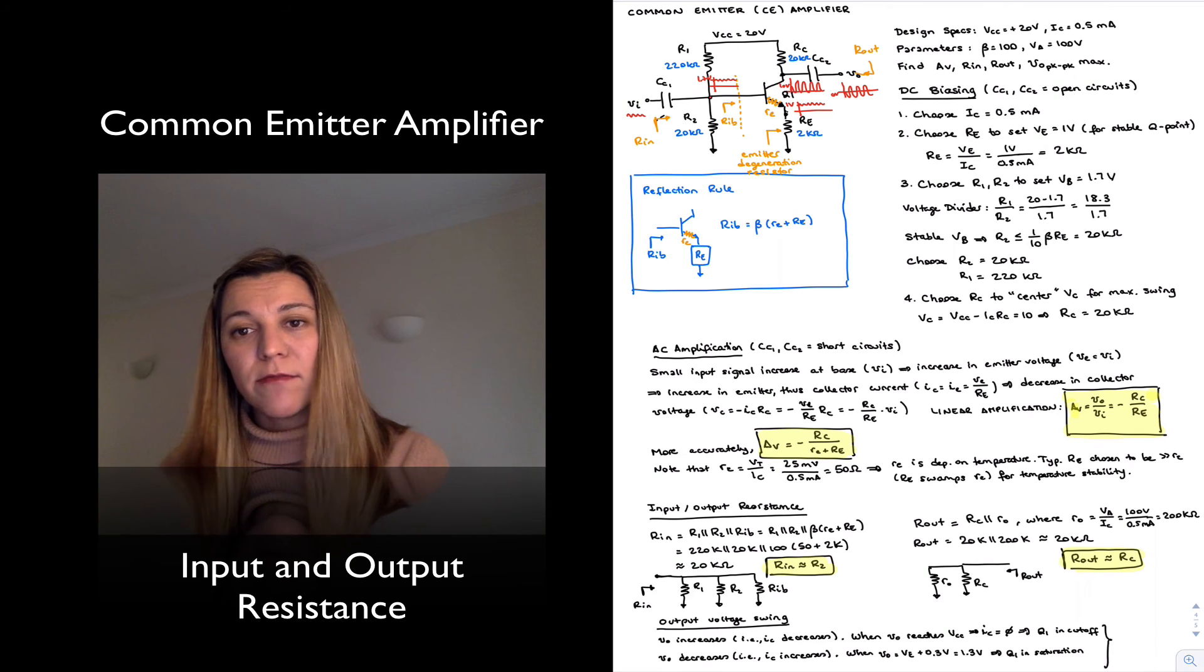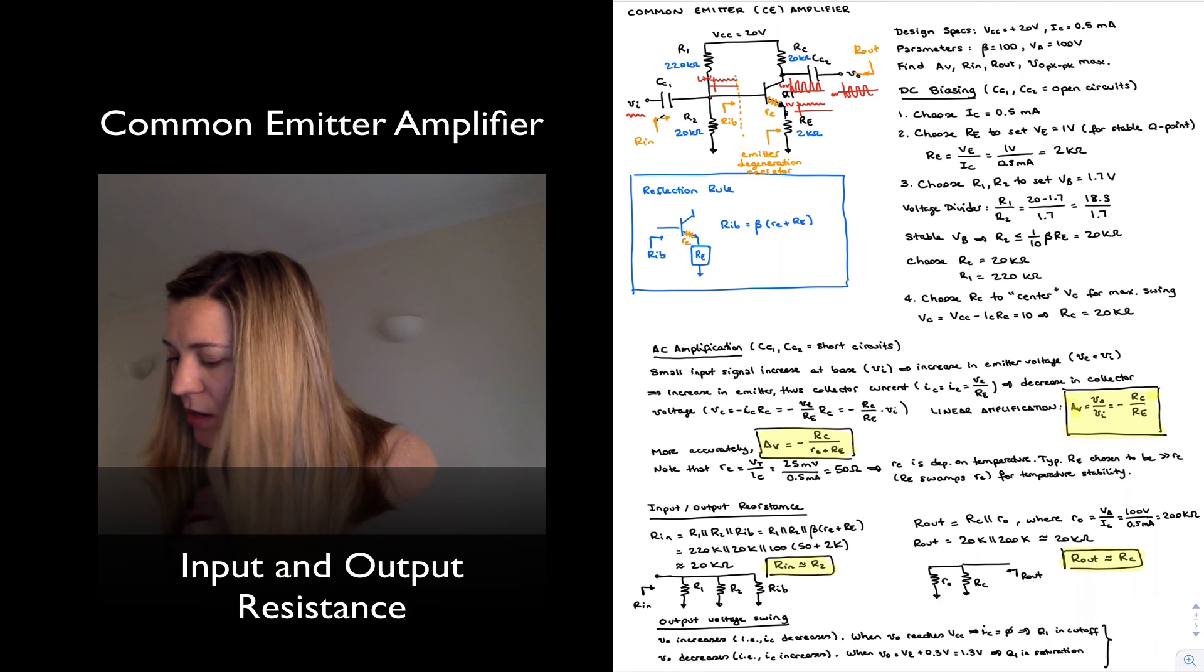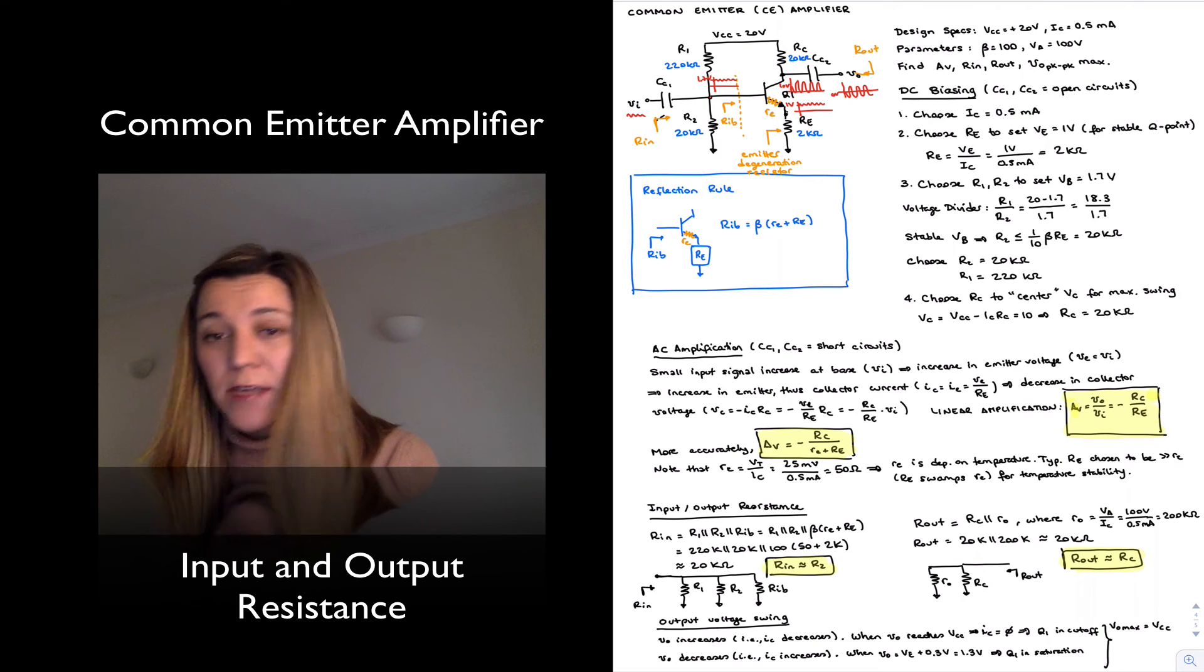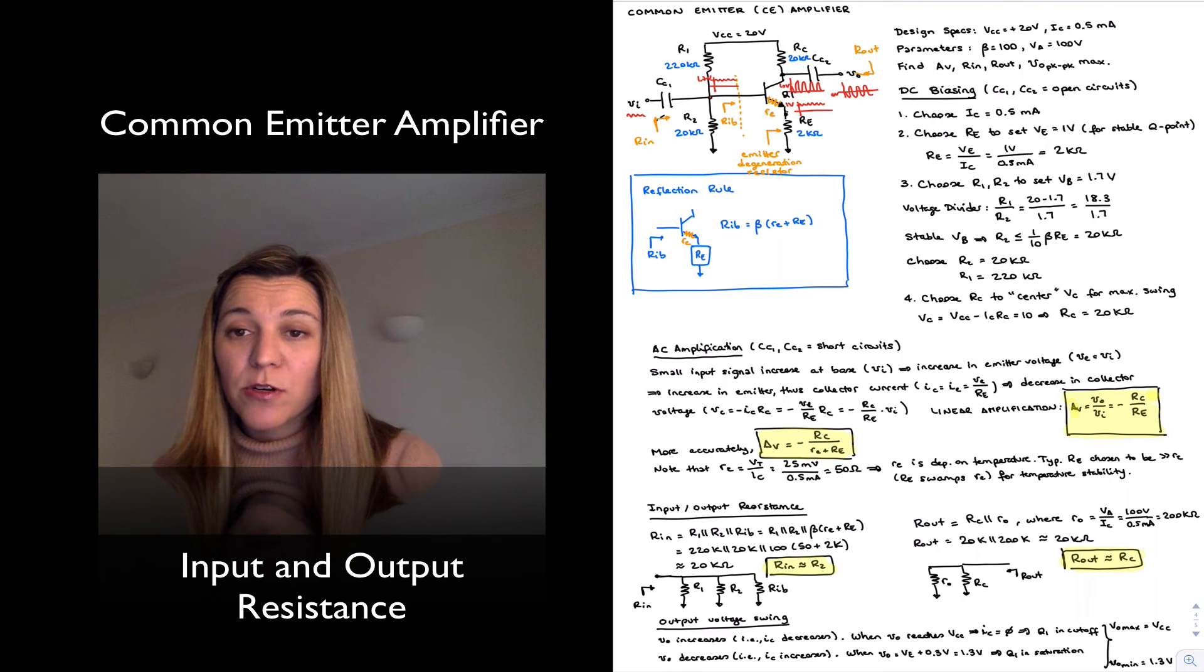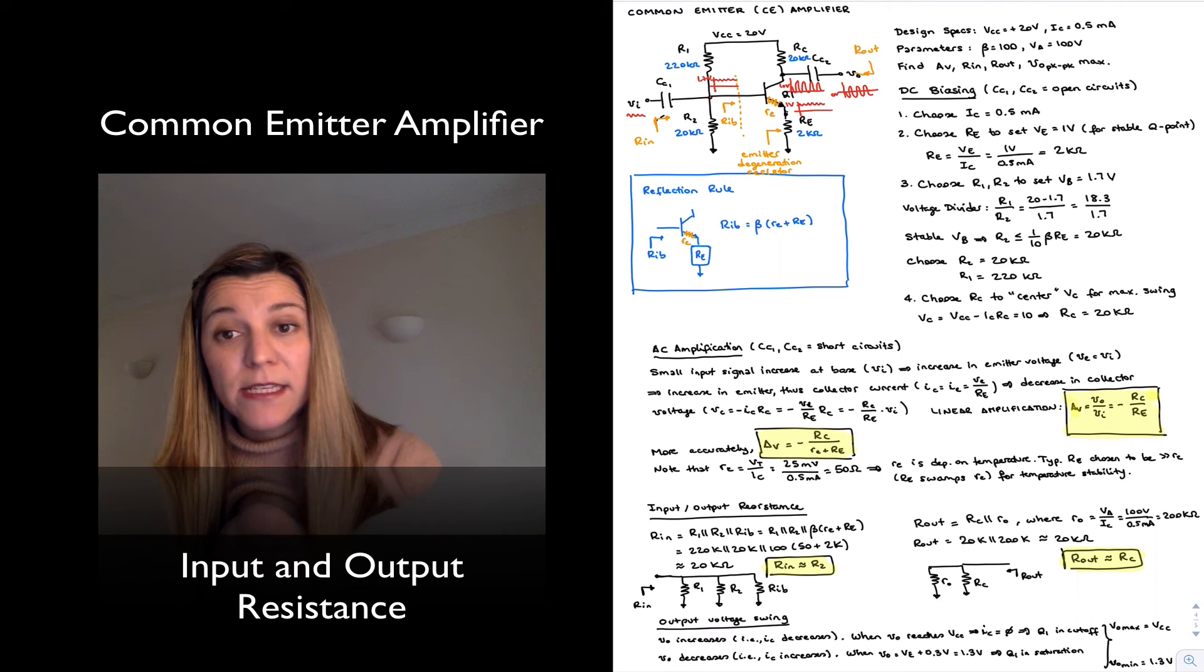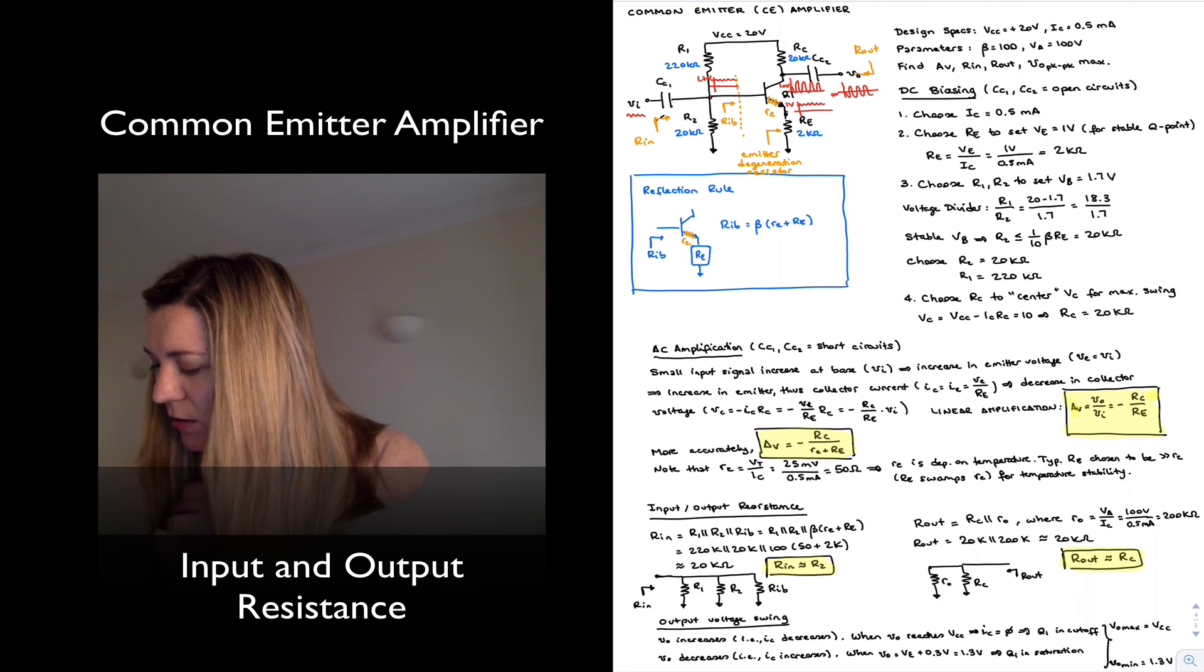And so, basically, these limits between cutoff and saturation dictate how far our voltage swing can go. Our maximum output voltage is going to be VCC before the transistor cuts off, or close to our minimum Vout is going to be around 1.3 volts. And our nominal or quiescent point Vout, Vout sub Q, was actually 10 volts.